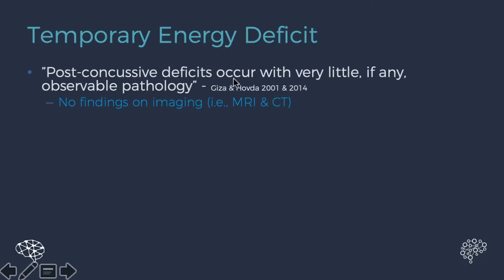Temporary energy deficit. Post-concussion deficits occur with very little, if any, observable pathology, meaning that the brain remains intact. So if you get an MRI or a CT scan, it's likely to be normal. And you might be confused by this, thinking I don't feel normal, I feel terrible. There's got to be something wrong with my brain.